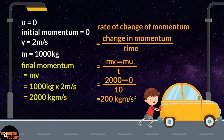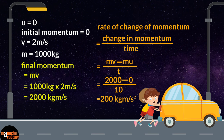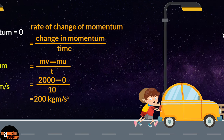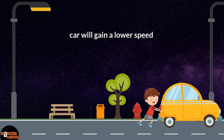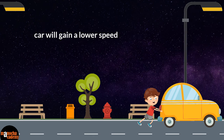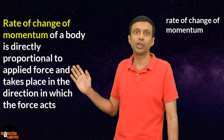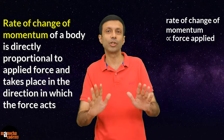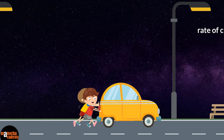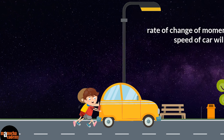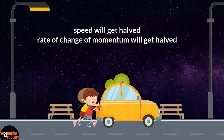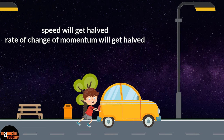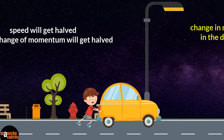If two people push the car, a greater force is applied and the car gains more speed, so the rate of change of momentum is more. If you apply a smaller force, the car gains lower speed and the rate of change of momentum is less. That's exactly what Newton's second law says: the rate of change of momentum is directly proportional to the force applied. Double the force, double the rate of change of momentum; half the force, half the rate.